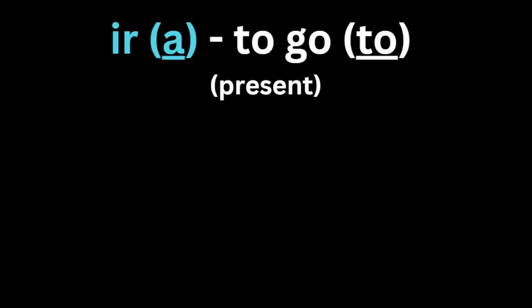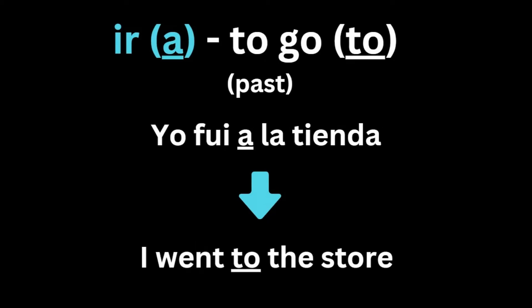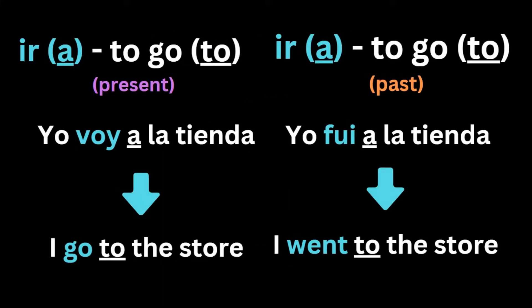Just like when we say actions in the present, such as yo voy a la tienda, I go to the store, it's the same way you would say the phrase in the past: yo fui a la tienda, I went to the store, which ultimately changes only one word. In this context, we know that the verb is ir because we see the preposition a, which is placed only after conjugations of the verb ir, regardless if it's in the present or past.